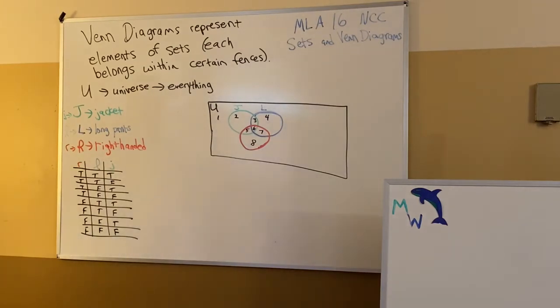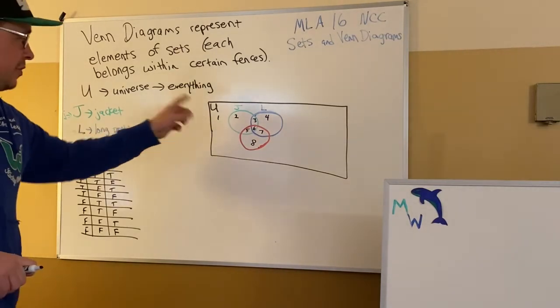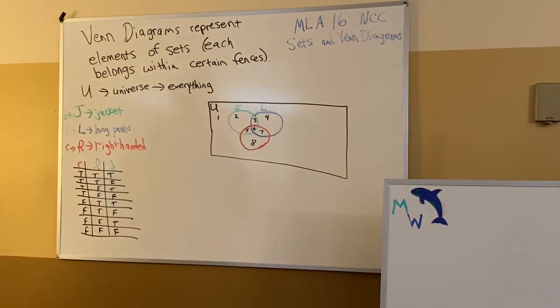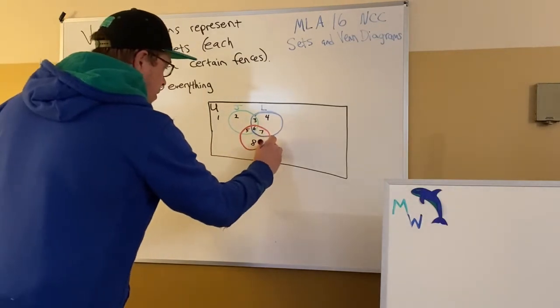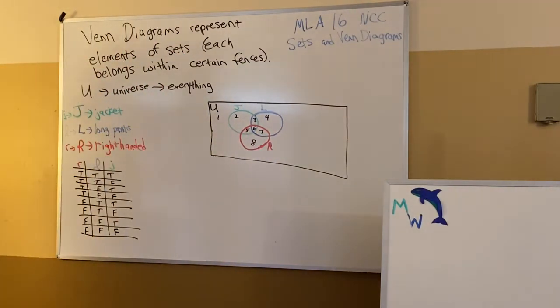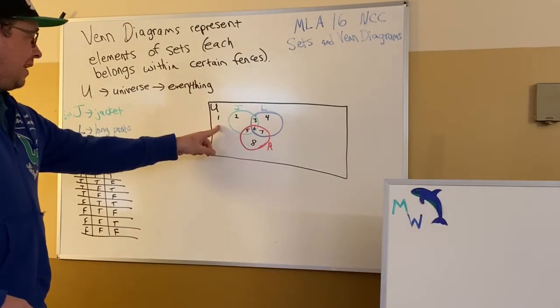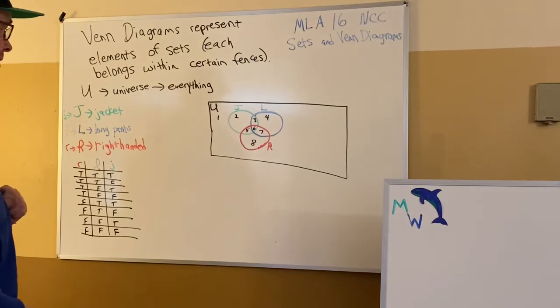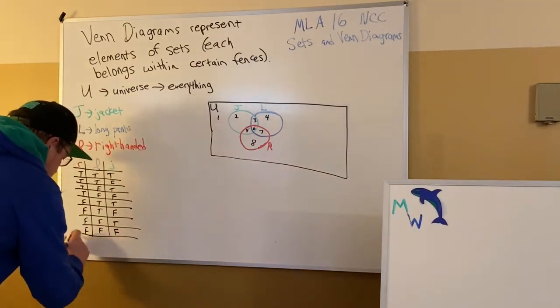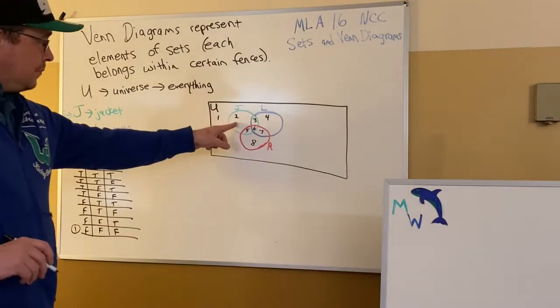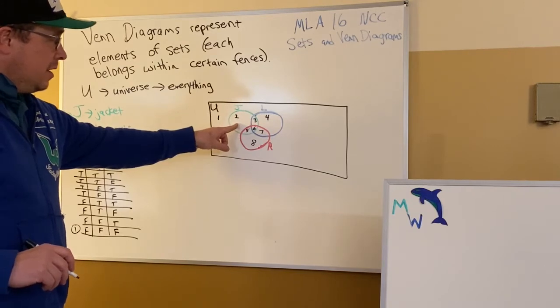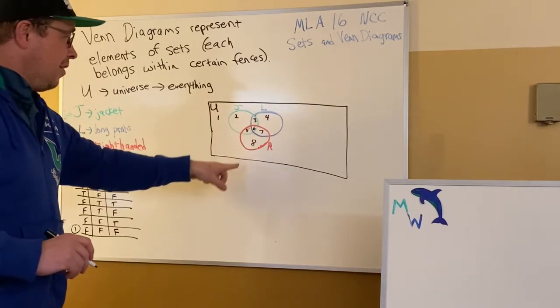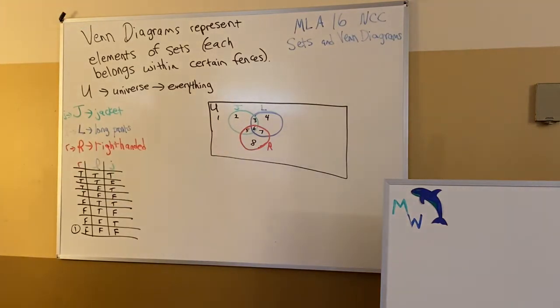My claim is every one of those eight regions is going to align with exactly one of these places. For example, if you're in U, you have no J, no L, and no right-handedness also. So what we have here is a person who is not wearing a jacket, not wearing long pants, is not right-handed. That person has false for all three features. This is where number one goes. Number two, we look at J. Yes, it's in J. It is not in L which is blue. It's not in R which is red. Two is true only for J. So we look for the one that has true for J only and nothing else. That winds up right here.